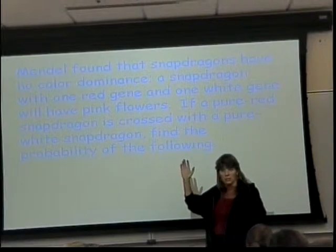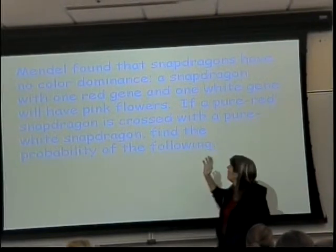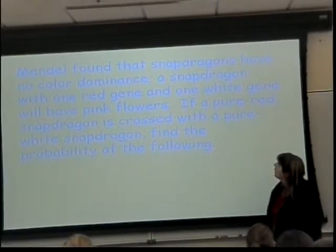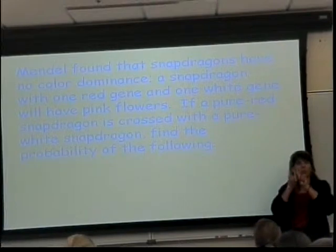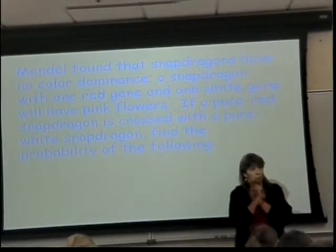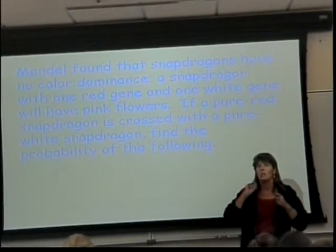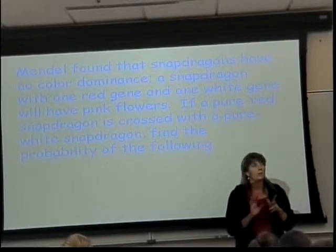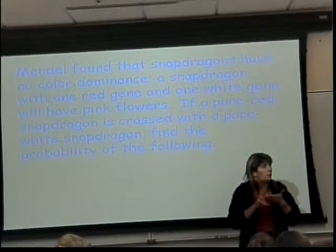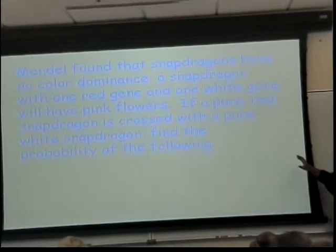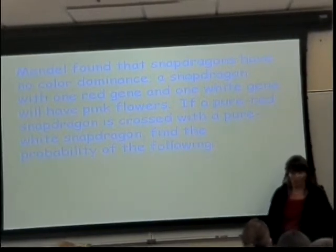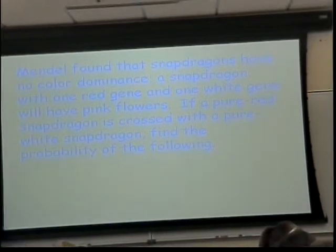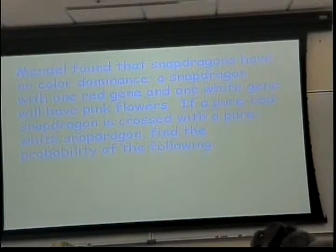So Gregor Mendel, our favorite scientist of all when it comes to Punnett squares, found out that snapdragons, this is a type of flower, have no color dominance. In other words, if you've got a snapdragon with a red gene and a white gene, because you have two color genes, if you put a red gene with a white gene, they mix or blend and make a pink flower. In order to have a red flower, you have to have two red genes. In order to have a white flower, you have to have two white genes. So this is what it means by having no dominance or being co-dominant, that they mix together. So we're going to take one flower that is pure red and cross it with one that is pure white. And we want to know what the kids are going to look like.